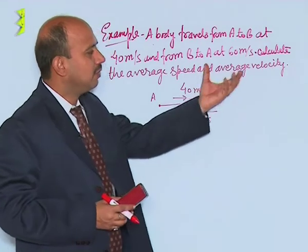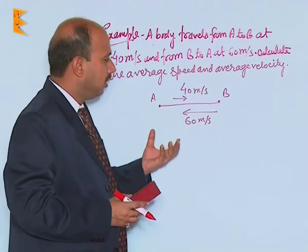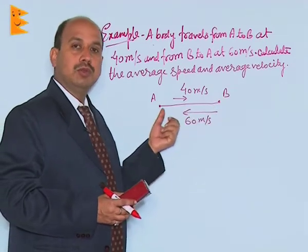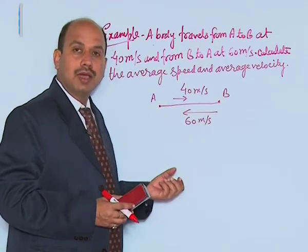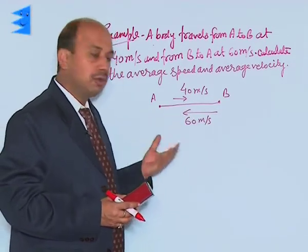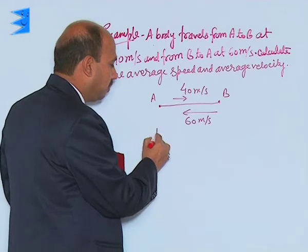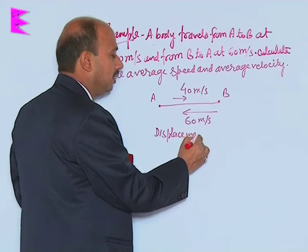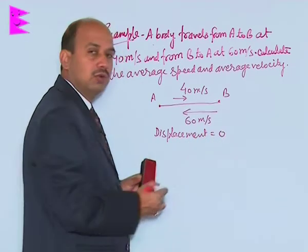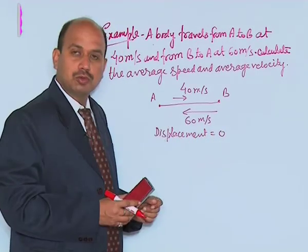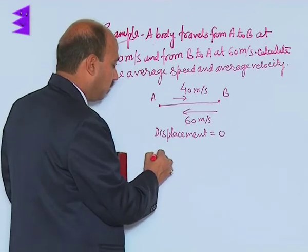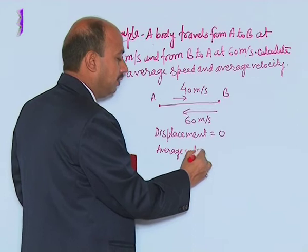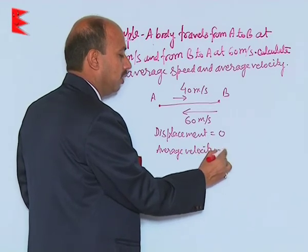Calculating average velocity is very simple in this case, because the body is going from A to B and then B to A — it is coming back to its original position. So the displacement is zero. Since the body has come back to its original position, the average velocity will be zero.